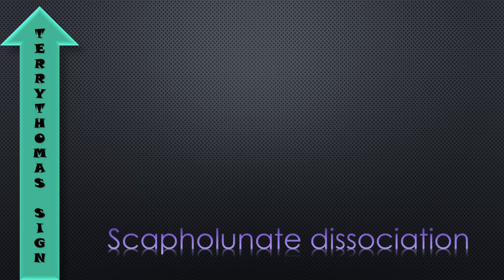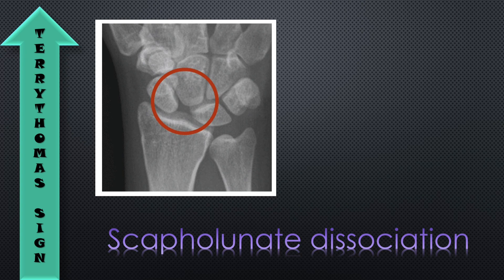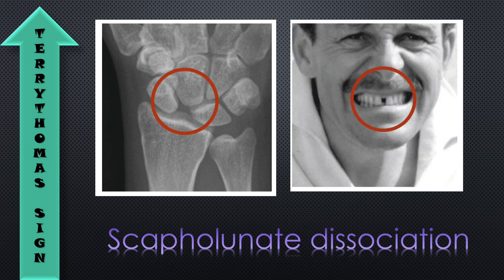The next one is the Terry Thomas sign. This is a radiological sign seen in scapholunate dissociation. Here we can see a white space between the lunate and the scaphoid — the angle may be more than 60 degrees when the person has fallen on an outstretched hand. This space is very similar to the gap in the front teeth of comedian Terry Thomas, hence the name Terry Thomas sign.